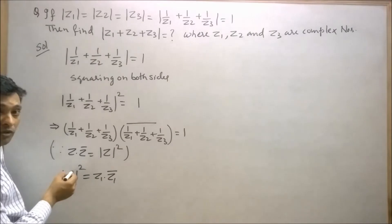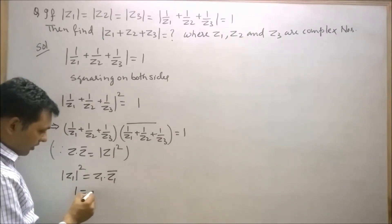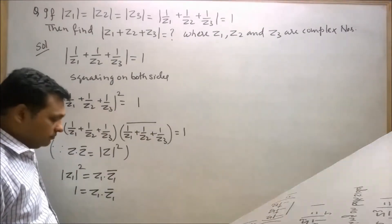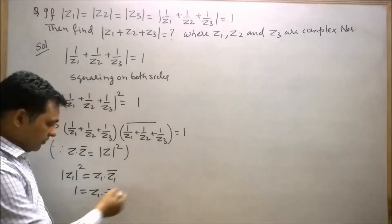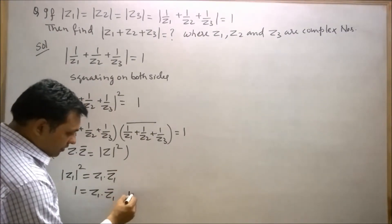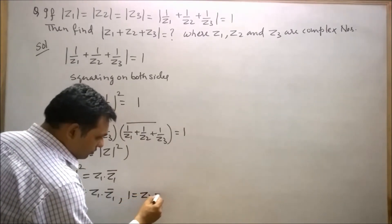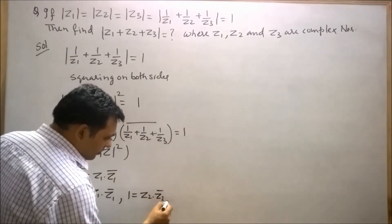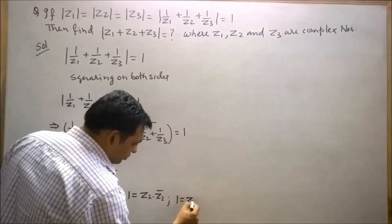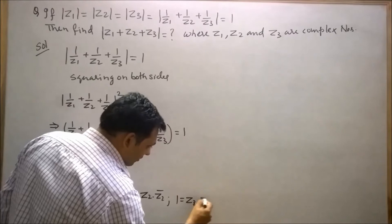The square of the modulus of z1 is 1, so 1 can be written as z1 times z1-bar. Similarly, 1 equals z2 times z2-bar, and 1 equals z3 times z3-bar.